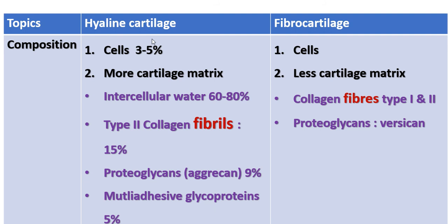First, the composition: hyaline cartilage cells make up 3 to 5 percent. Fibrocartilage cells are present but smaller than hyaline cartilage cells. Hyaline cartilage has more matrix; fibrocartilage has less. Water content of hyaline cartilage is 60 to 80 percent. Hyaline cartilage contains fibrils rather than fibers, responsible for the homogeneous appearance of the cartilaginous matrix. It also contains proteoglycans aggregate at 9 percent, which is also responsible for the homogeneous appearance, as well as multi-adhesive glycoproteins.